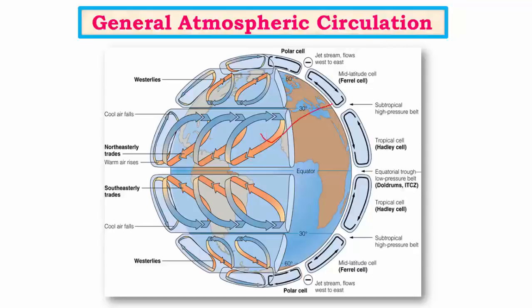Unlike Hadley and Ferrell cells where heat exchange is between various latitudes, in the Walker cell heat exchange is between various points on the same latitude. There are different branches of Walker cell — one zone in the Atlantic Ocean, a major Walker cell in the Pacific Ocean, and one in the Indian Ocean as well. Walker circulation is closely associated with the equatorial low pressure belt, or the intertropical convergence zone.